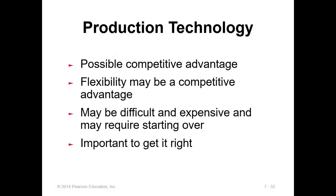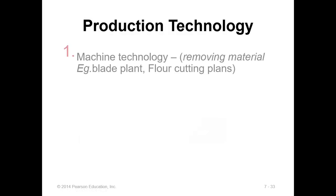Now we discuss production technology — what technologies are suitable for production. It provides competitive advantage, is more flexible, and it is very important to get it right. The first example is machine technology, used for removing and cutting materials. Examples include automatic blade cutting machines and floor-cutting plants like those in a biscuit factory that automatically cut dough into biscuit sizes.